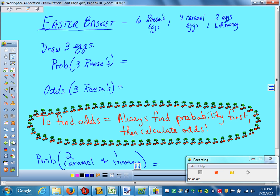All right, so I don't have little shamrock pictures, so we're headed to our Easter basket. In your Easter basket, you have six Reese's eggs, four caramel eggs, and two eggs with money in them.